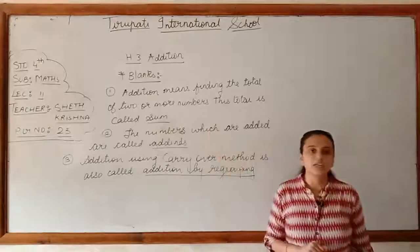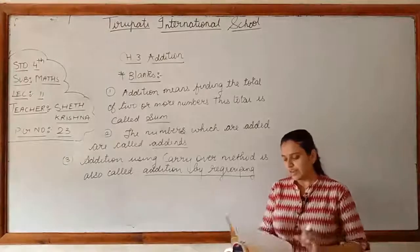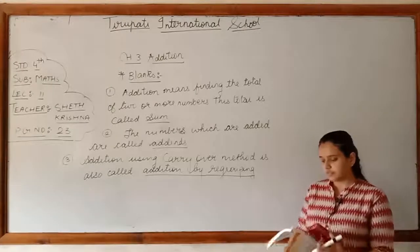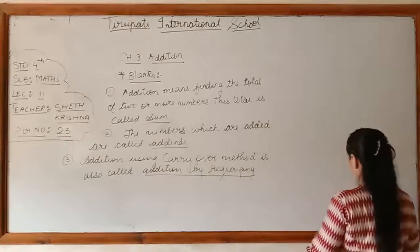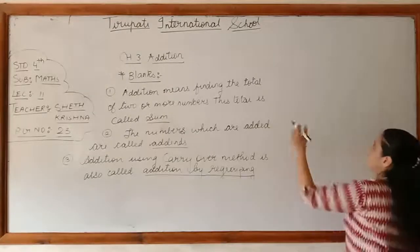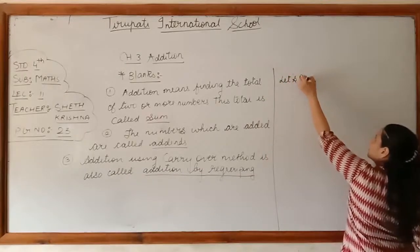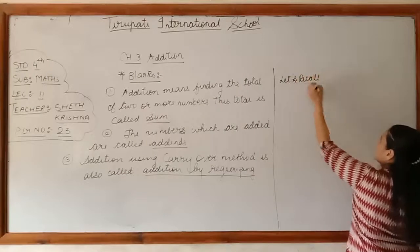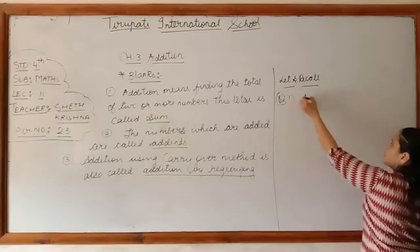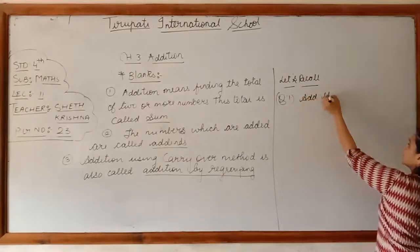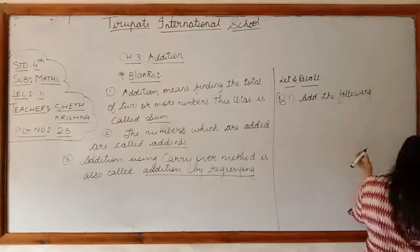These three blanks you have to write in your book. Now we will start. Let's recall question number one: add the following numbers.